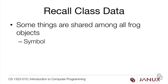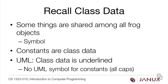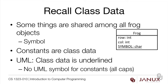Let's think more about the design. Some things are shared amongst all frog objects — for example, the symbol. If we're going to use an asterisk to represent our frogs, we'll use it for all of them, so it doesn't make sense to save a separate copy in every single instance. Remember that constants are almost always class data — think back to things like Math.PI or Math.E. In UML, class data is underlined, but there's no UML symbol for a constant, so I use all caps. Every object will have its own row and its own column, but the symbol should be the same for all objects in the class — that's class data, which is why it's underlined.